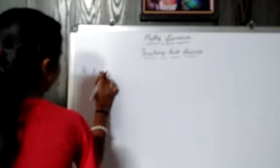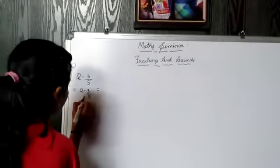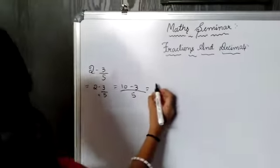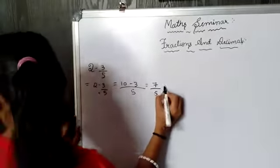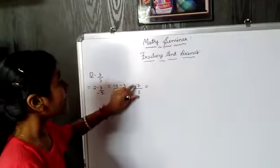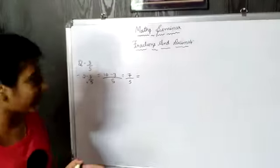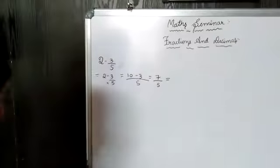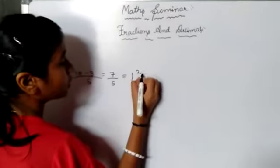The first problem is 2 minus 3 upon 5. How do we solve this? We have to put an equal sign. So 2 minus 3 upon 5 equals — we multiply: 2 becomes 10 upon 5. So 10 minus 3 upon 5 gives us 7 upon 5. This is an improper fraction because the numerator is bigger than the denominator. We have to convert it to a mixed fraction, which will be 1 and 2 upon 5.